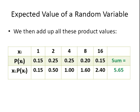So what we're going to do now is sum up all those values there, in this row here, and what we will get is 5.65. So the expected value of the random variable X is 5.65.